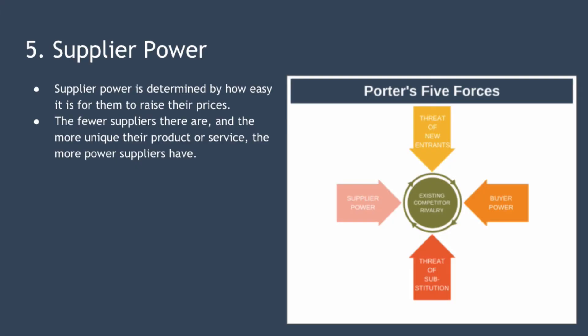The final force is supplier power. Your supplier's power is determined by how easy it is for your suppliers to raise their prices. The fewer suppliers there are and the more unique their product, the more power they have. It's easy for a supplier to raise their prices when their product is unique and you can't switch to another supplier. If your suppliers have high power, they will be able to raise their prices, squeezing your profits because you'll have no other option but to absorb those increased costs. When this happens, your supplier captures profit from your industry and profits across your industry are reduced.